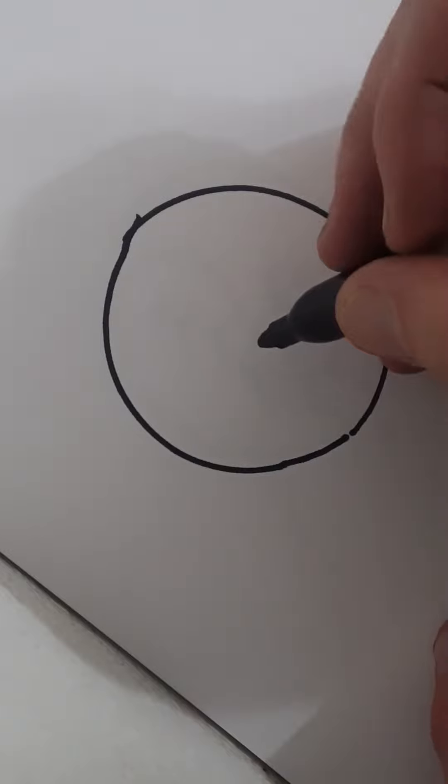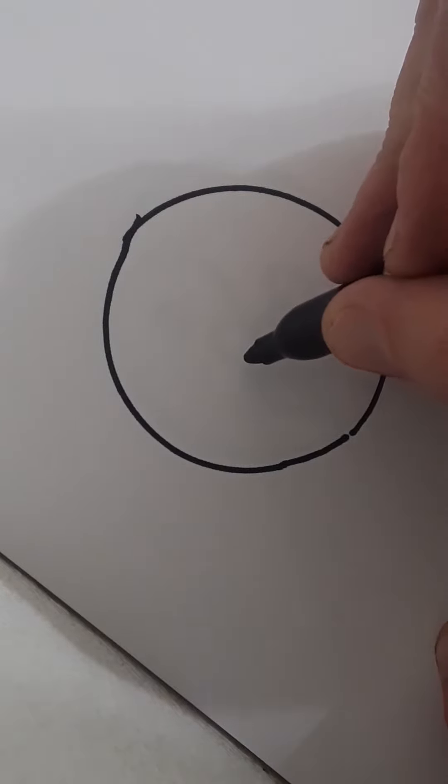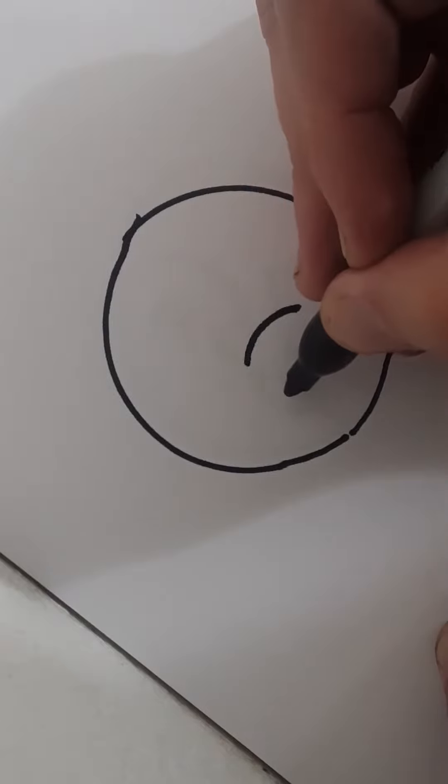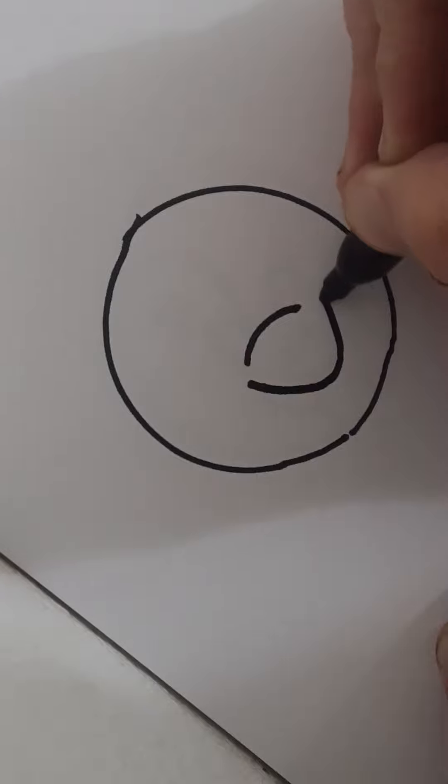Then you do a forehead just under the center of the circle, and then do the face of the fox under that. Make a V.